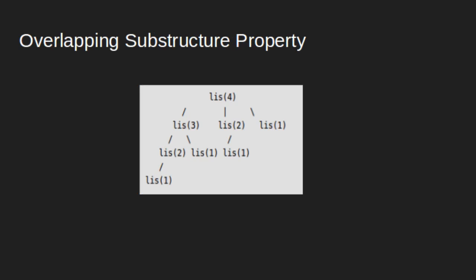Considering the implementation of the discussed example, the following is the recursive tree for an array of size 4. Subproblems LIS of 2 and LIS of 1 are solved repeatedly. So this problem has the overlapping substructure property and recomputation of same subproblems can be avoided by using dynamic programming.